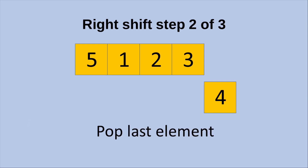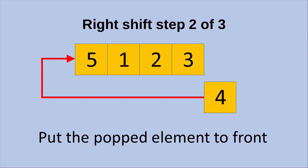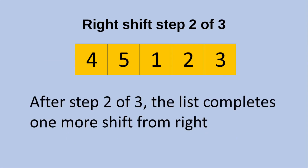Now let us see the second step out of the three steps involved. We pop the last element, which is 4, and then put the popped element, which is 4, to the front of the list. After the movement, the list has completed one more shift from the right-hand side. So now we have the elements as 4, 5, 1, 2, and 3.